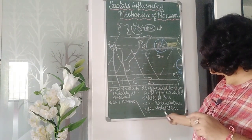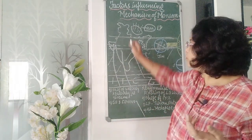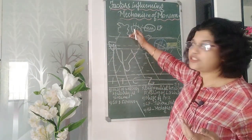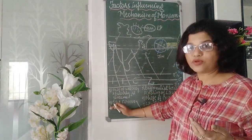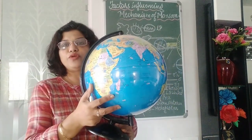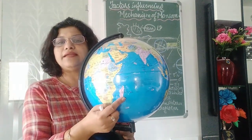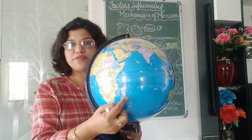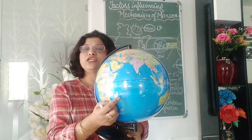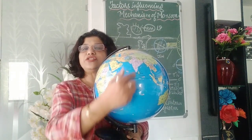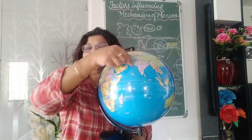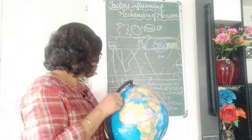The fourth factor is high pressure near Madagascar. It is not only important to have low pressure in India — it is also important that the southern oceans have high pressure. When the heat belt shifts towards the north, the southern portions naturally become colder. The area to the east of Madagascar becomes very cold and develops a high pressure area, so that winds are attracted towards India's low pressure area. They cross the equator and move towards India because the convergence zone has shifted to the northern part of India.